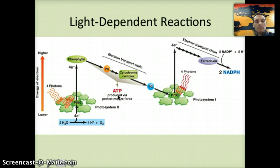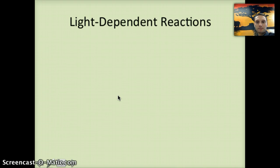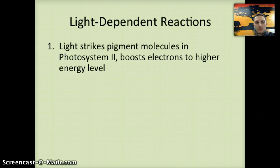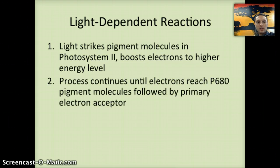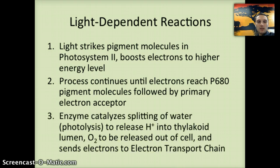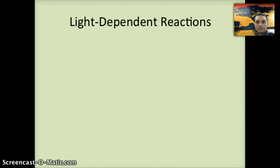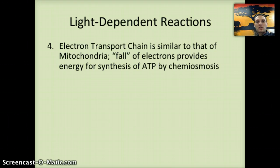Let's take a look at the step-by-step of the light-dependent reactions. Light strikes the pigment molecules in photosystem 2 and boosts those electrons to a higher energy level. This continues until the electrons reach the P680 pigment, followed by the primary electron acceptor. An enzyme catalyzes the splitting of water molecules to release hydrogen into the thylakoid lumen, O2 is released as a waste product, and the electrons move through the electron transport chain, which — similar to the mitochondria — provides energy for ATP synthesis by chemiosmosis.